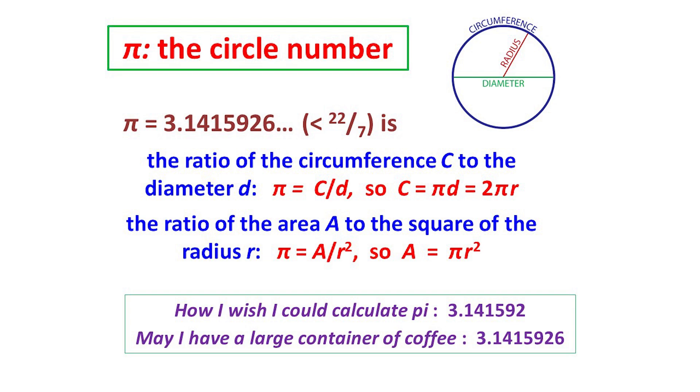And because the diameter of a circle is twice its radius r, this is equal to 2πr. Pi is also the ratio of the area of a circle to the square of its radius – pi equals A/r², and so A equals πr². These formulas hold for all circles, from a pizza to the moon.